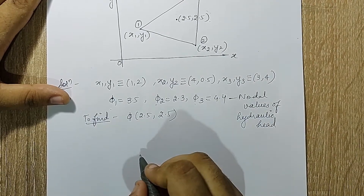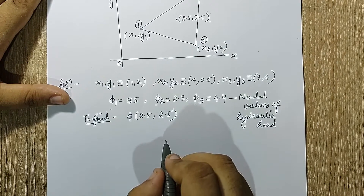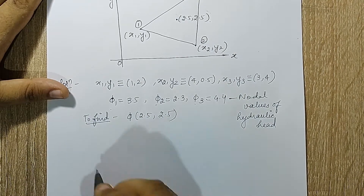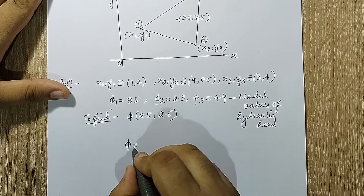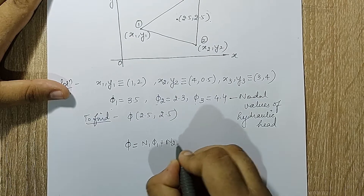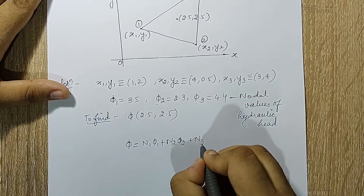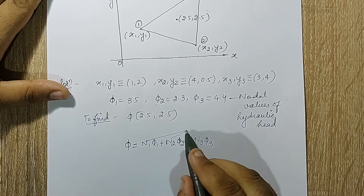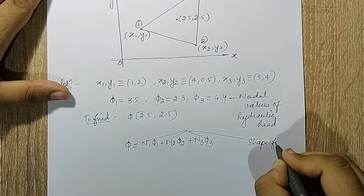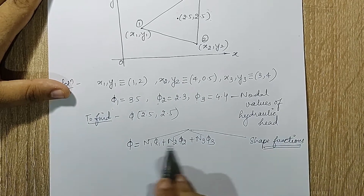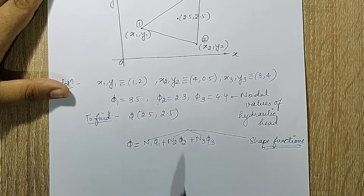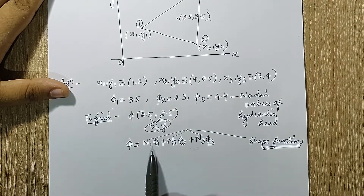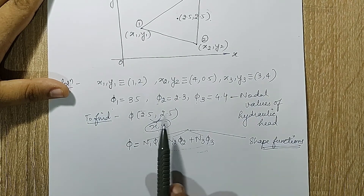The equation is: phi = n1·phi1 plus n2·phi2 plus n3·phi3. Here phi 1, phi 2, phi 3 are given in the question. n1, n2, n3 are the shape functions which I need to calculate. Once I calculate them I can easily find the value of phi at (2.5, 2.5), which gives us the x and y terms to substitute.